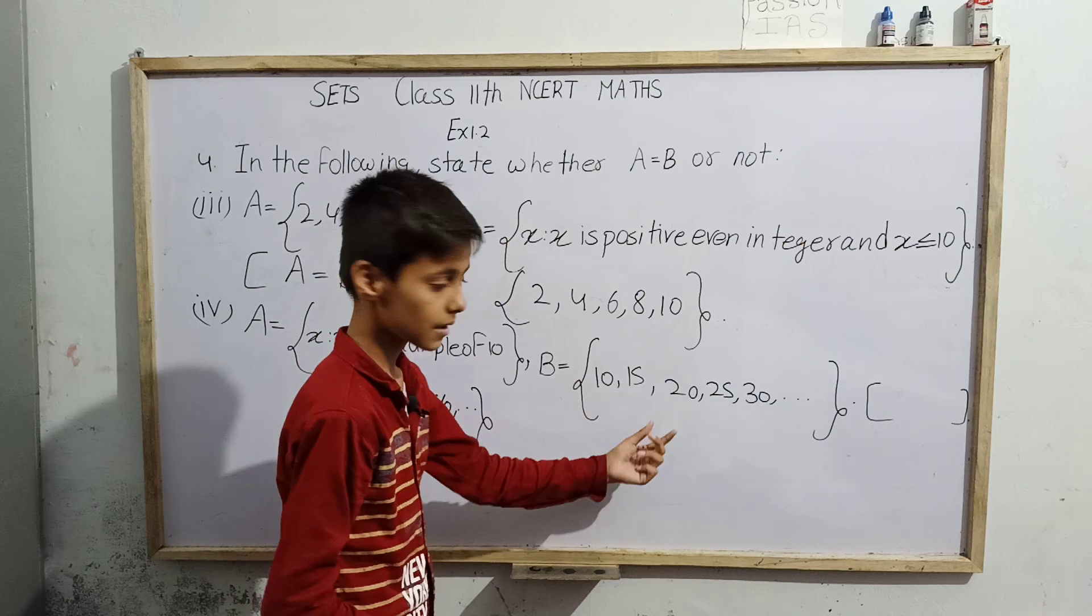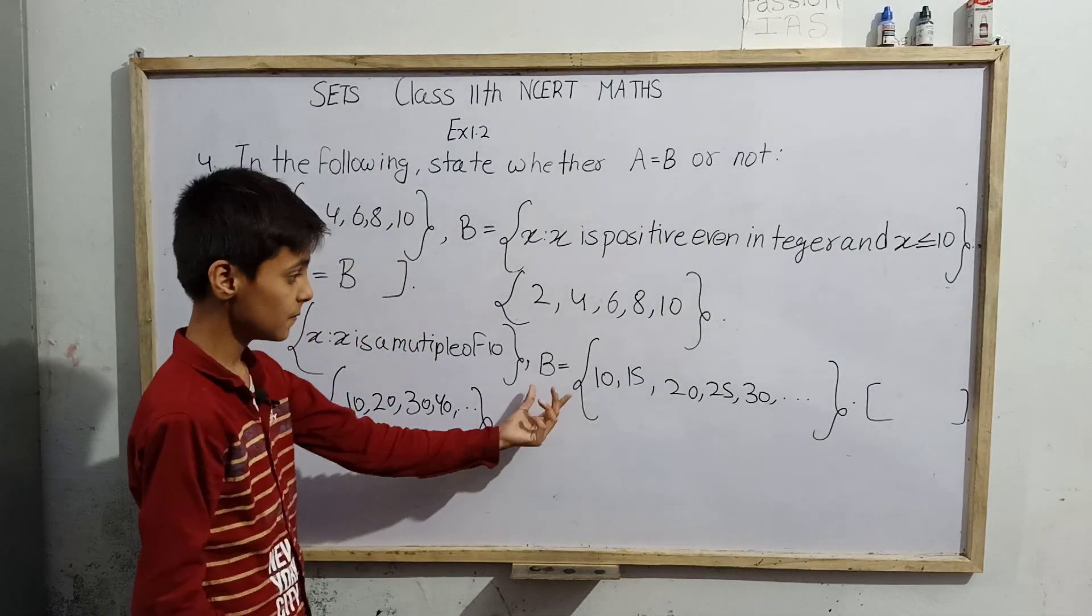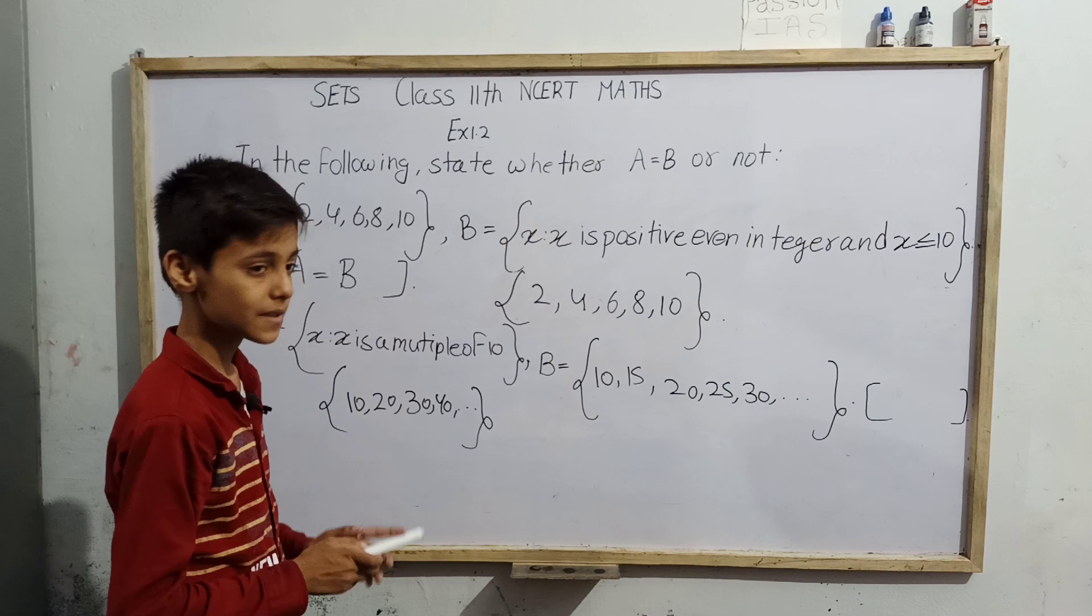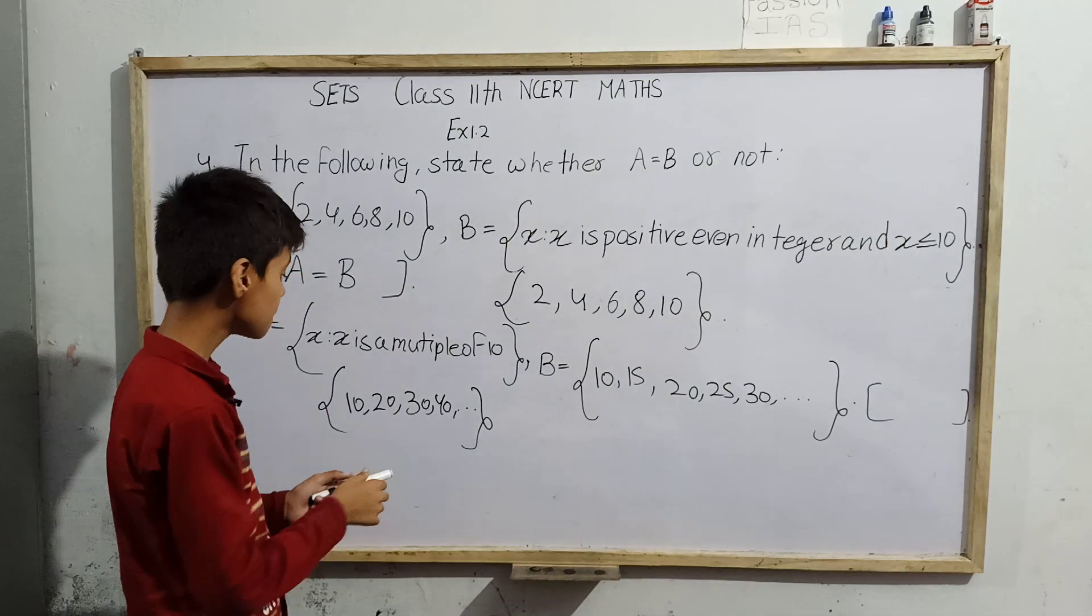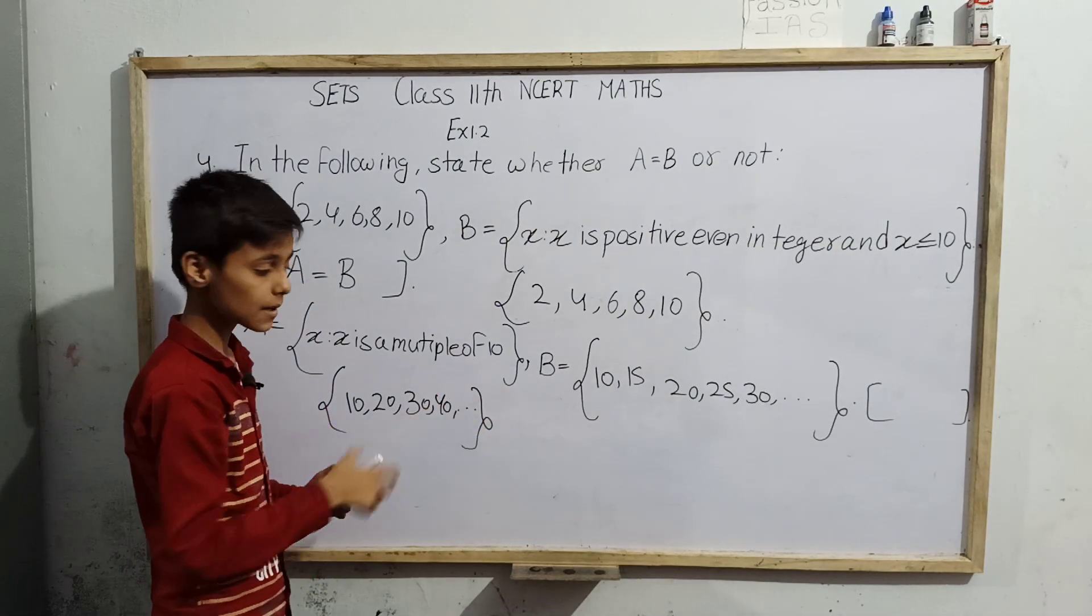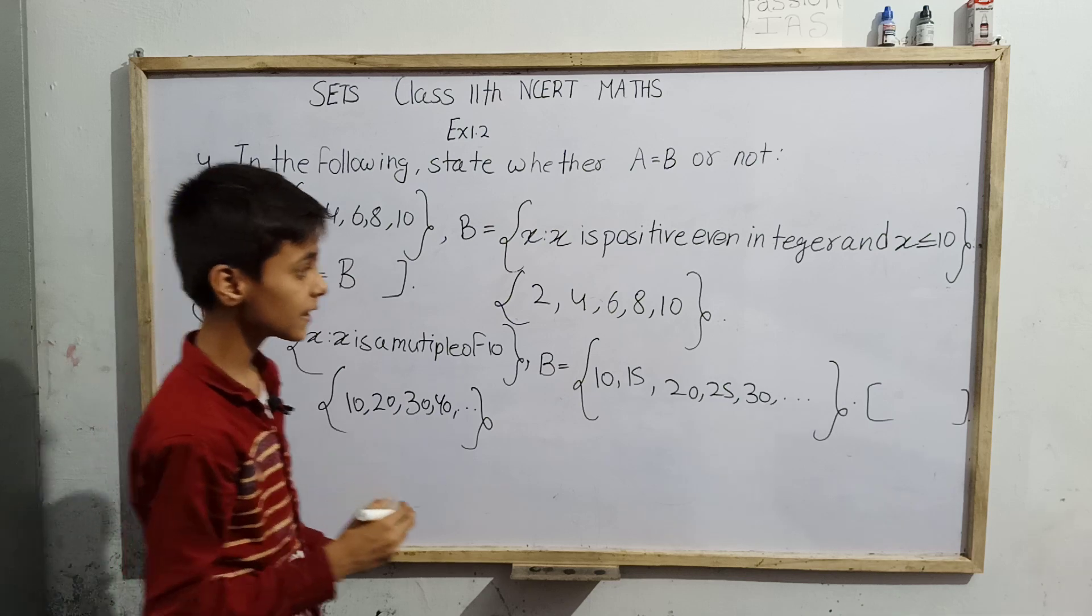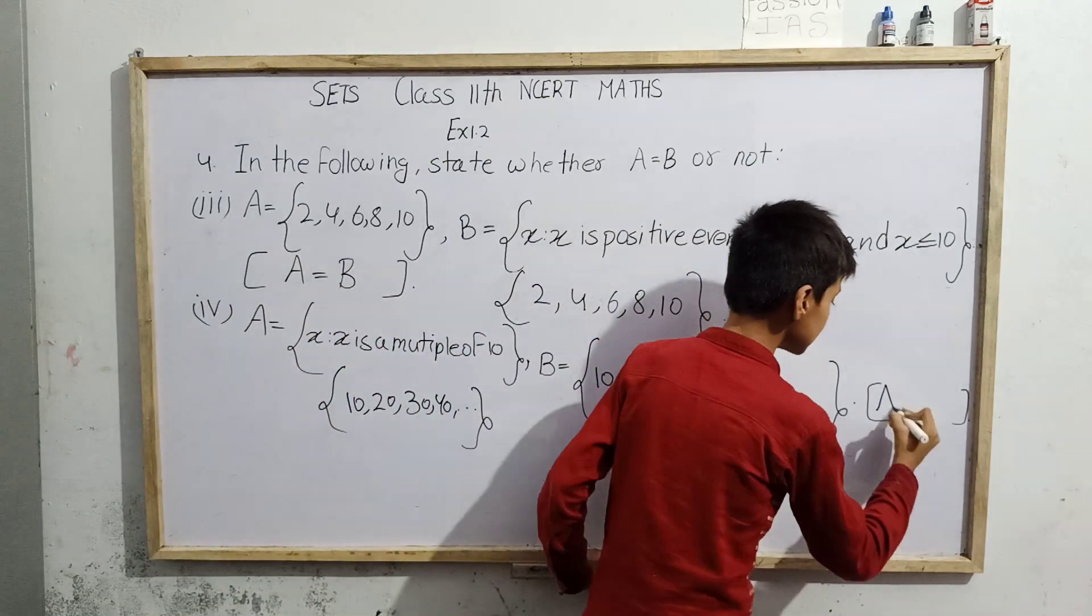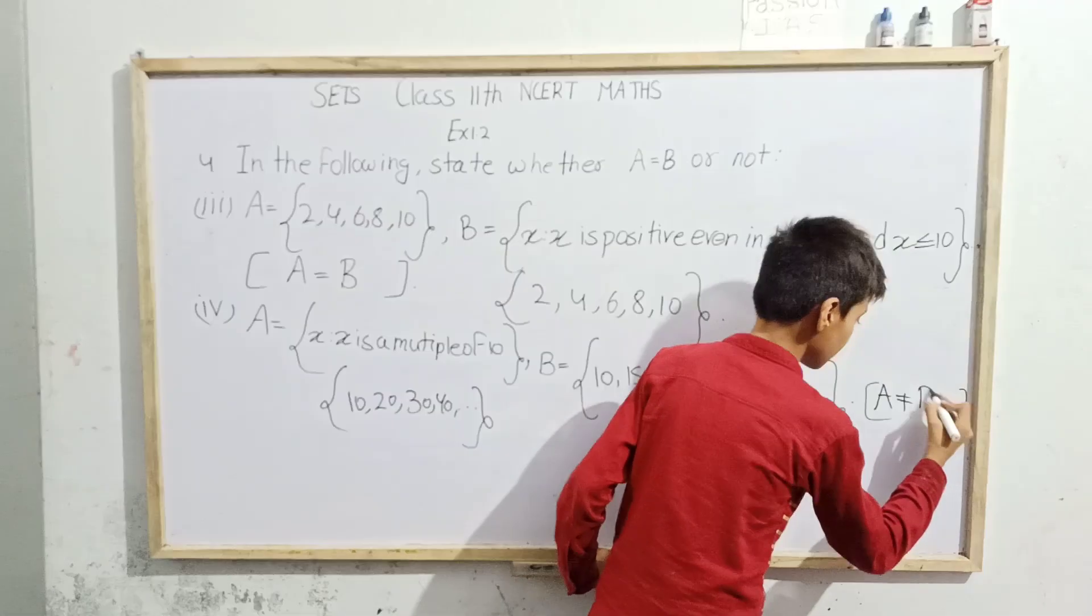But number of elements are not same. Here 15 is coming, 25 is coming, but they are not multiples of 10. The elements present are not same, so we can write that A is not equal to B.